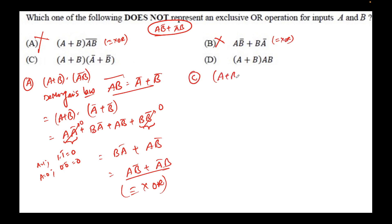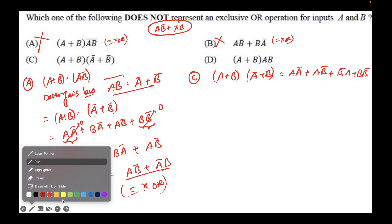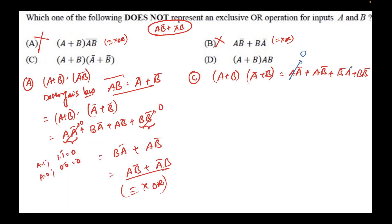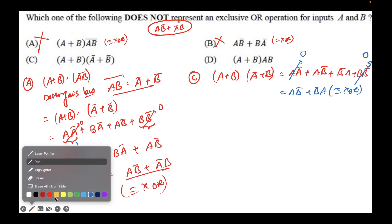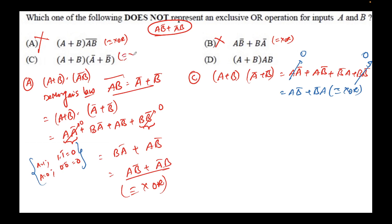Option C is (A + B)·(A-bar + B-bar). This is effectively the same expansion as option A: A·A-bar + A·B-bar + B·A-bar + B·B-bar. The terms A·A-bar and B·B-bar go to 0, leaving A·B-bar + A-bar·B, which is again the XOR expression. So option C also represents XOR and cannot be the correct answer.